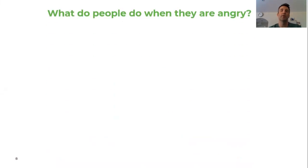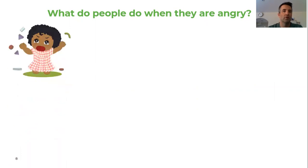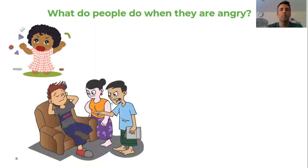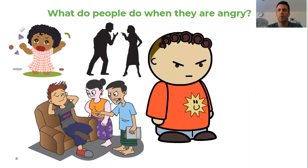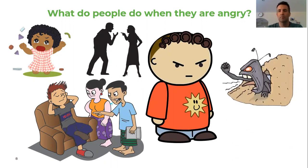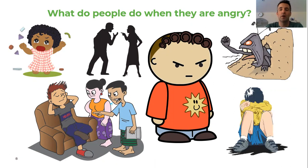So what do people do when they are angry? Let's have a look at some pictures. Some people have a bit of a tantrum — often younger people like toddlers. Some people go into themselves and go very quiet even though they might be angry underneath. Some people argue, some have a frown on their face, others shout, and some people just sulk and go very quiet.